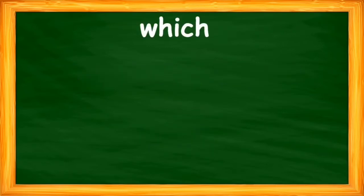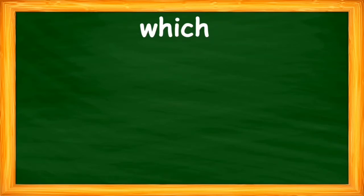Which word is this? The word is 'which'. Children, please repeat after me — look at the word, you can point to the word as well and read: which. What does 'which' mean? 'Which' is used when we ask for any kind of information, and whenever we use the word 'which' there is a question mark after the sentence.